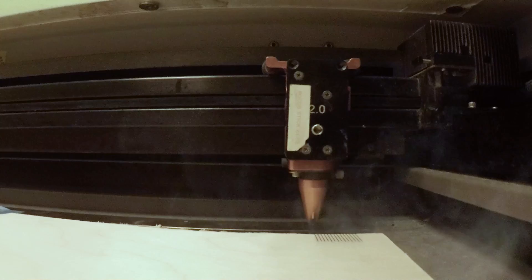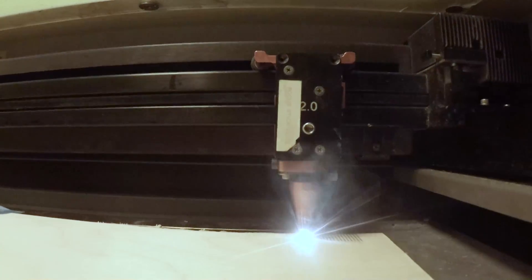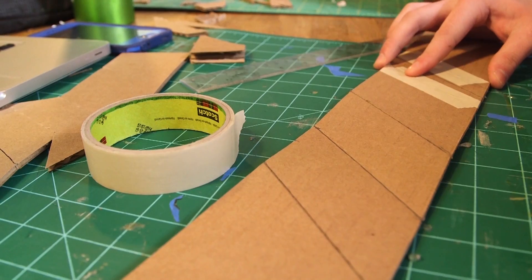At Newview we have a laser cutter to cut the wood for our models, but at home it's easy to do it yourself with some scissors, some cardboard, and some tape.